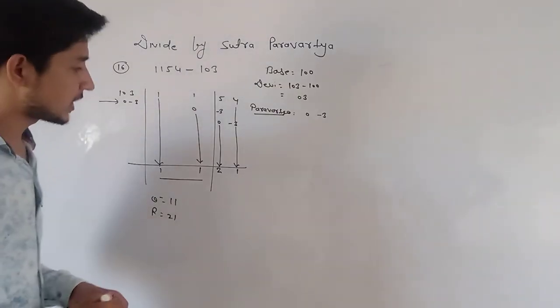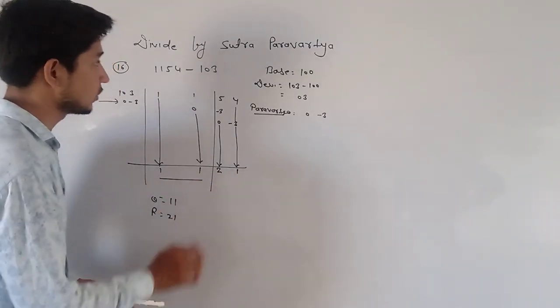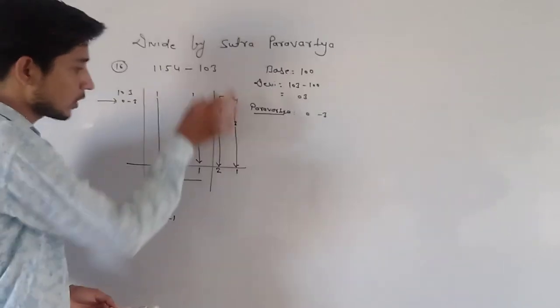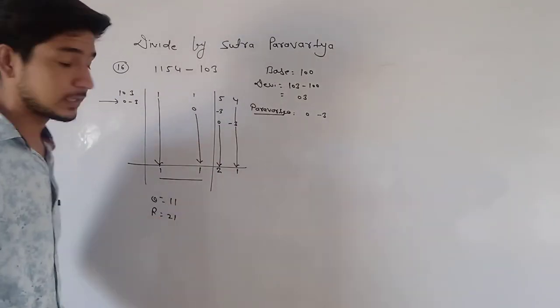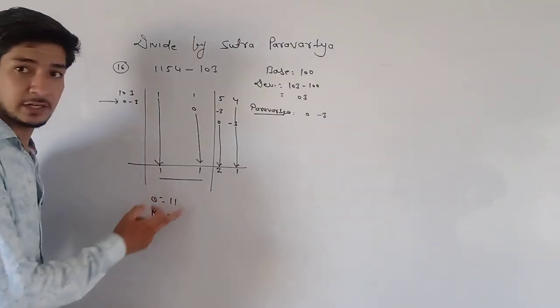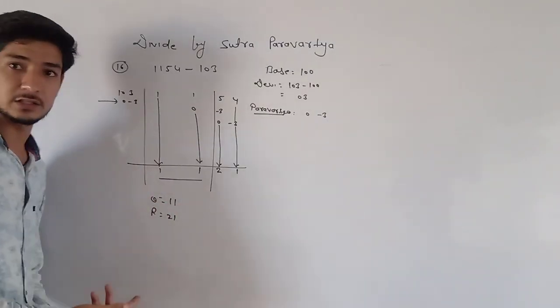We need to confirm that the remainder should be smaller than the divisor. Otherwise, we will divide the remainder further. So, the quotient is 11 and the remainder is 21. This is the answer. Thank you.